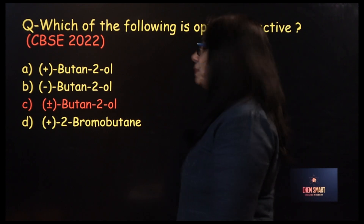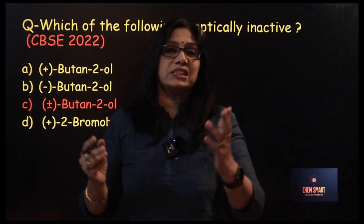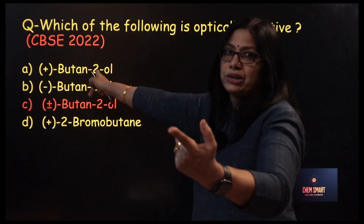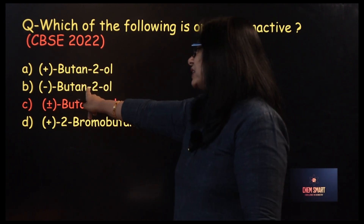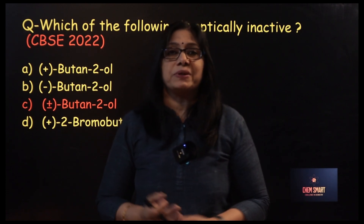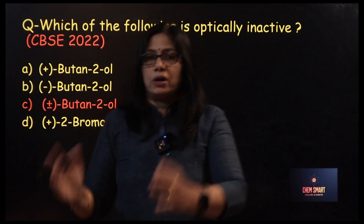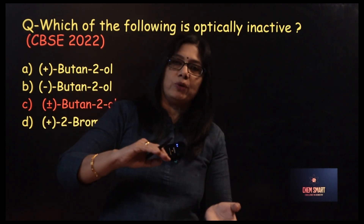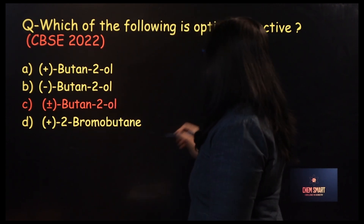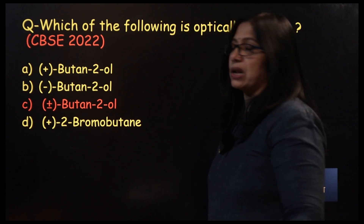Which of the following is optically inactive? Optically inactive means it should be a racemic mixture. Plus-butan-2-ol is dextrorotatory — it is just one enantiomer. But the option containing plus-minus (DL) represents a racemic mixture, which will be optically inactive. The rotation due to one isomer is cancelled by the rotation due to the other because they are equal but in opposite directions. So the answer is (±)-butan-2-ol, which is a racemic mixture.